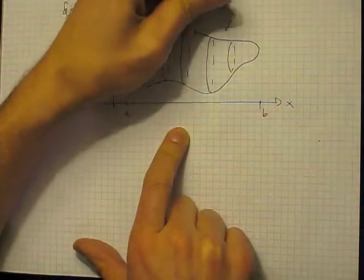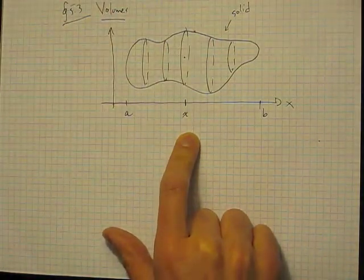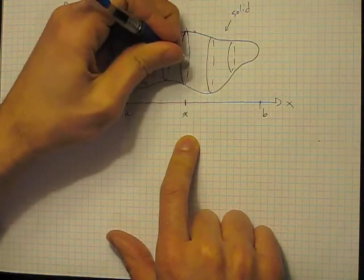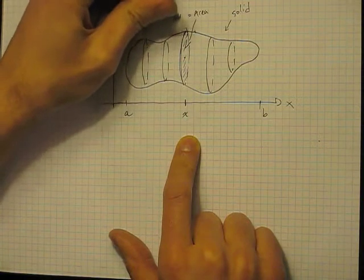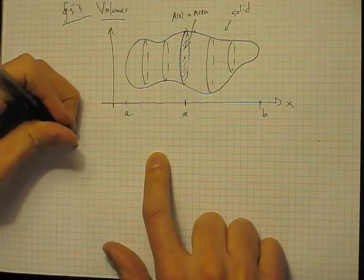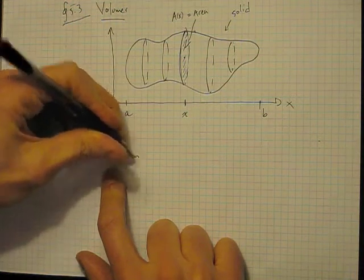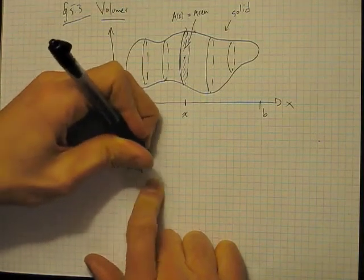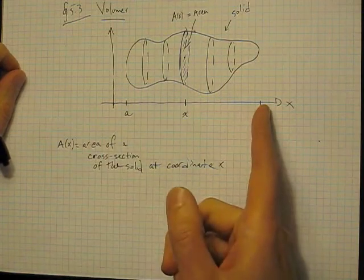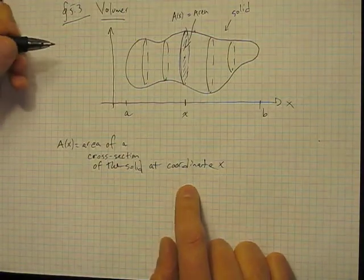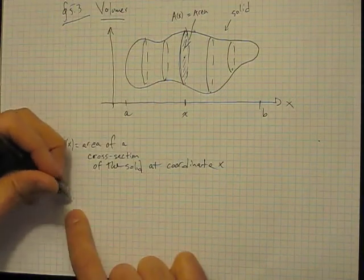So this is a solid object, and now I want to imagine that if you take an x value somewhere inside it, there's a cross-sectional area. Let's call this A(x) — the area of the cross-section of the solid at coordinate x. For every value between a and b on the x-axis, there's a slice of this solid, and we're going to use this area function to compute the volume.